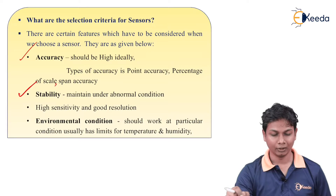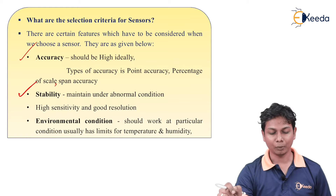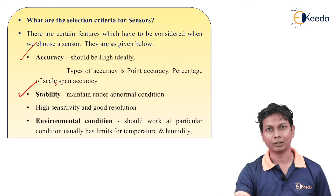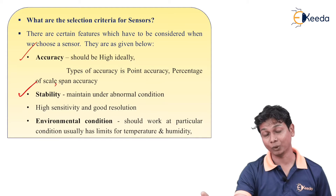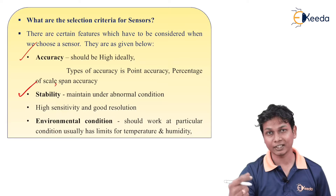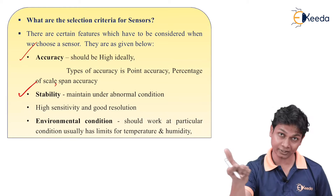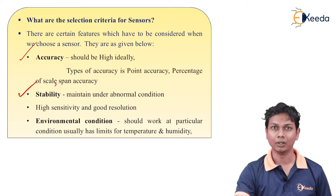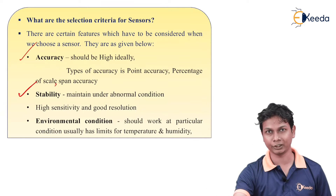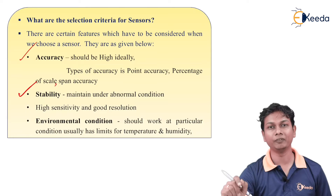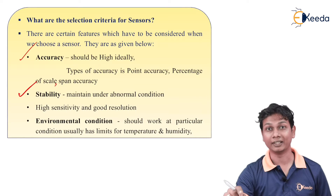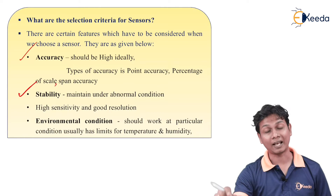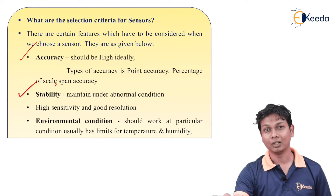The next criterion is stability. Stability should be maintained under abnormal conditions. The condition can be normal or abnormal — for example, if the sensor is carrying certain additional weight, or there is a power fluctuation or power failure. Under any abnormal condition, our sensor should still work. That is the main thing and it is called stability. Under any abnormal condition, the output of a sensor should be stable.